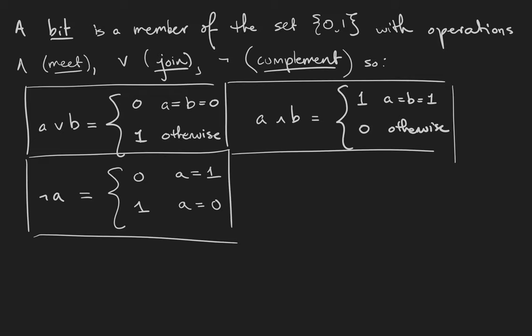Boolean matrices, or matrices made of bits, are going to help us understand relations a little bit better.